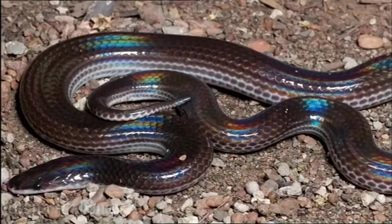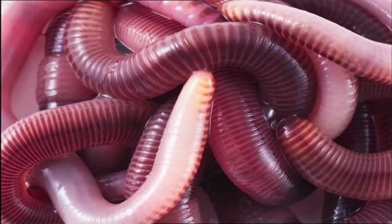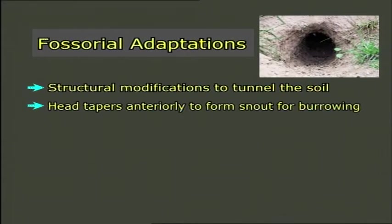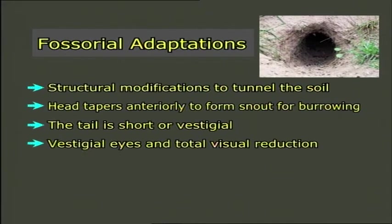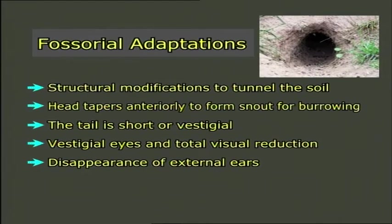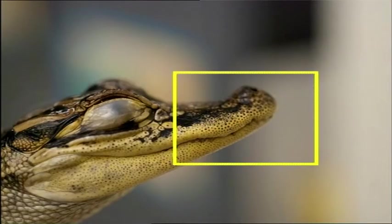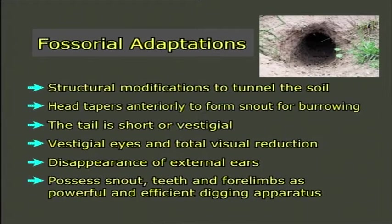Limbless lizards, snakes, and earthworms are cylindrical, while Talpa and echidna are spindle-shaped or fusiform, so as to offer least resistance to subterranean passage. The head tapers anteriorly to form a short snout for burrowing. The tail is short or vestigial. The eyes tend to become vestigial as they are of no use in a dark habitat; complete subterranean life causes total visual reduction. The external ears also tend to disappear, since they would obstruct burrowing.